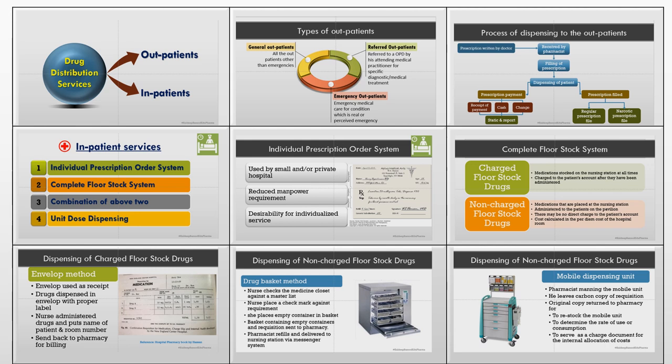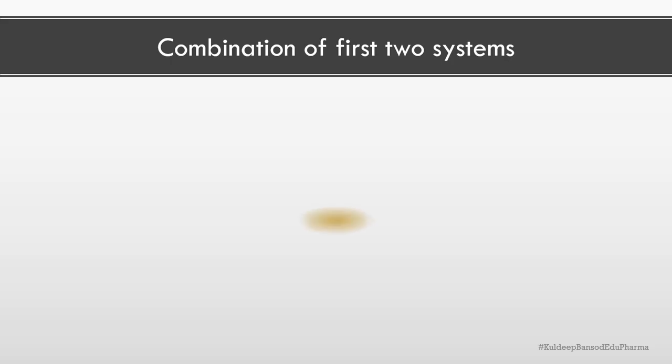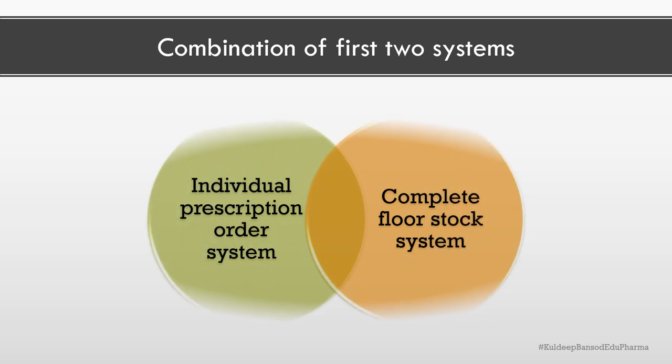The third method of drug distribution to the inpatient is a combination of the first two systems, i.e., a combination of the individual prescription order system and the complete floor stock system. As we have already discussed both systems in the previous part, let's go to the last method of drug distribution.